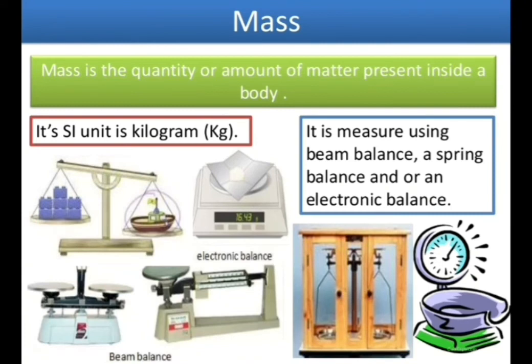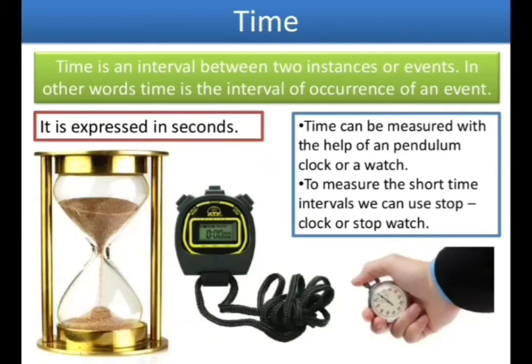Moving to our second physical quantity: mass. It is the quantity or the amount of matter contained in a body. The mass is measured in kilograms, and that is the SI unit — the SI unit of mass is kilogram. The symbol for kilogram is kg. Mass can be measured using a beam balance or an electronic balance.